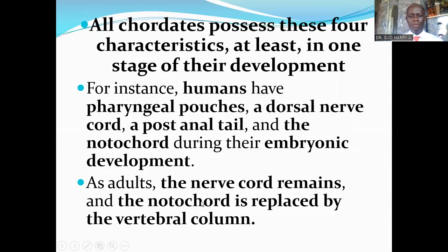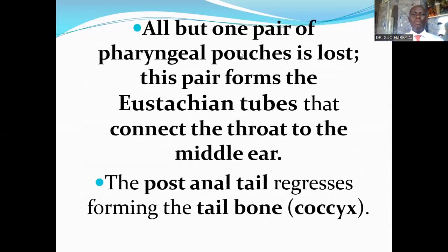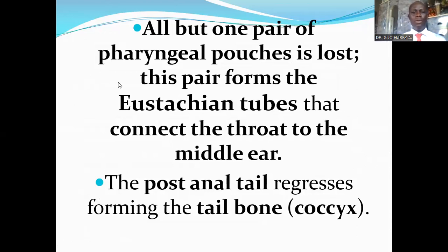The nerve cord becomes the spinal cord and the brain. All but one pair of pharyngeal pouches is lost. This pair forms the Eustachian tubes that connect the throat to the middle ear. One of the pairs of the pharyngeal pouches remains in the adults and forms the Eustachian tube. The post-anal tail regresses to form the tailbone, which is called the coccyx.